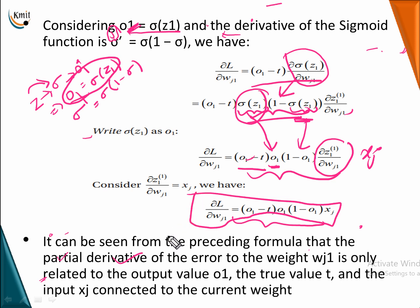So the partial derivative of error with respect to weight WJ1 is only related to the predicted output O1, the true value T, and the input xj. The gradient is: (O1 minus T) times O1 times (1 minus O1) times xj. It is not dependent on weight or any other parameter — only on actual result, predicted result, and the input given. That is our inference from the gradient of a single neuron.